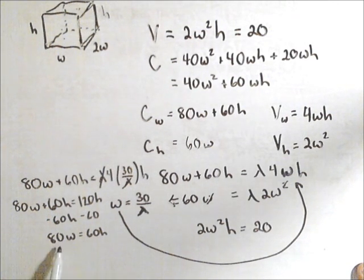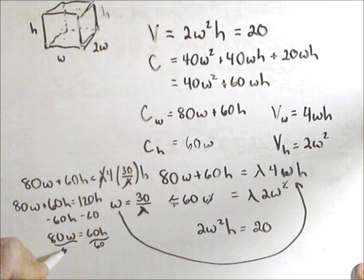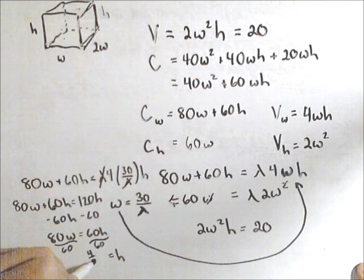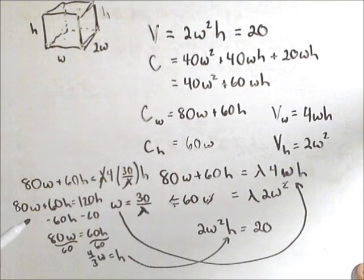And now what I can do, this didn't give me W or an H, but it did give me the relationship between the two. So I'm going to solve this for H so I can plug it in here. So I'm going to divide both sides by 60, and I get H equals 4 thirds W, so that I can plug it into this guy.